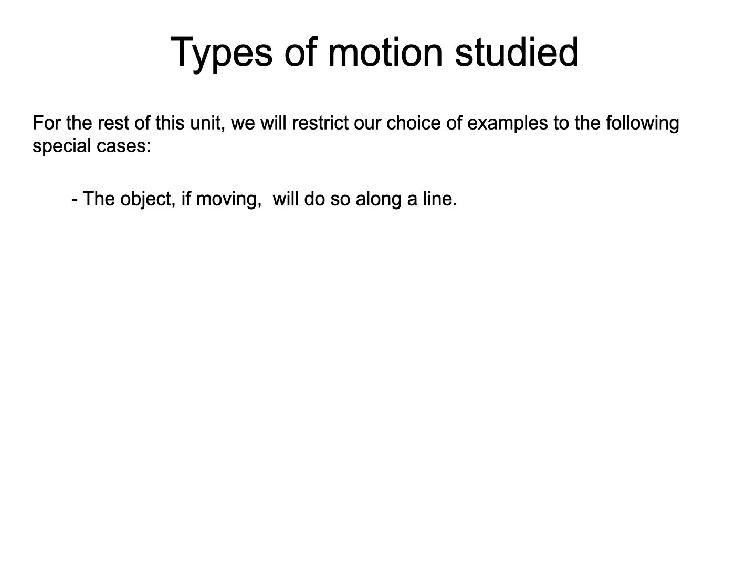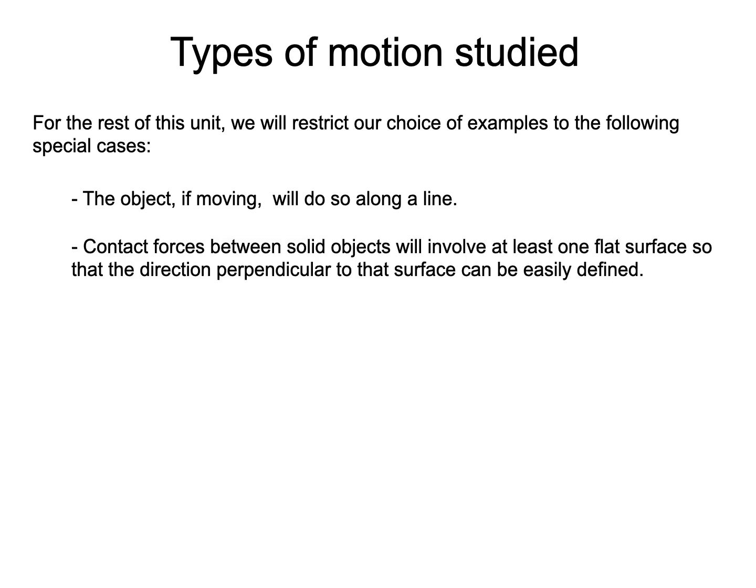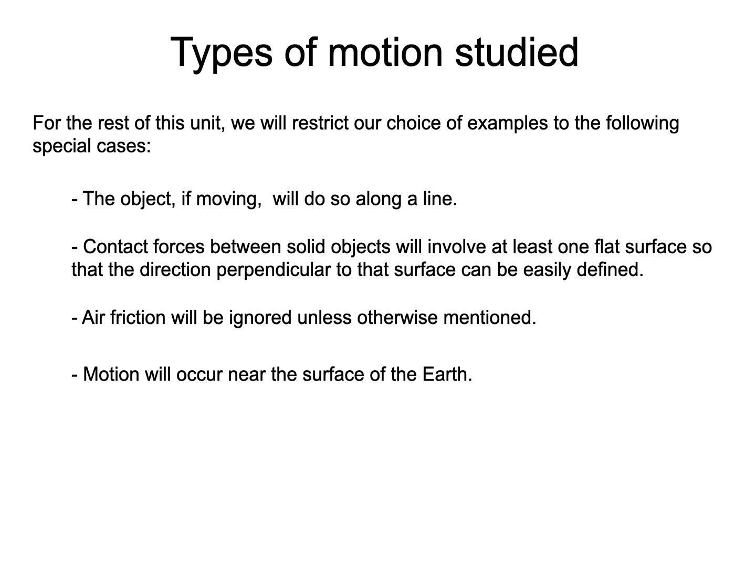When contact forces are present, at least one of the solid bodies involved will have a flat surface touching the other object, so that a vector normal to the surface can be defined. We will ignore air friction, except in cases where it makes no sense to ignore it, like when dealing with parachutes. Finally, all our examples will take place near the surface of the Earth.